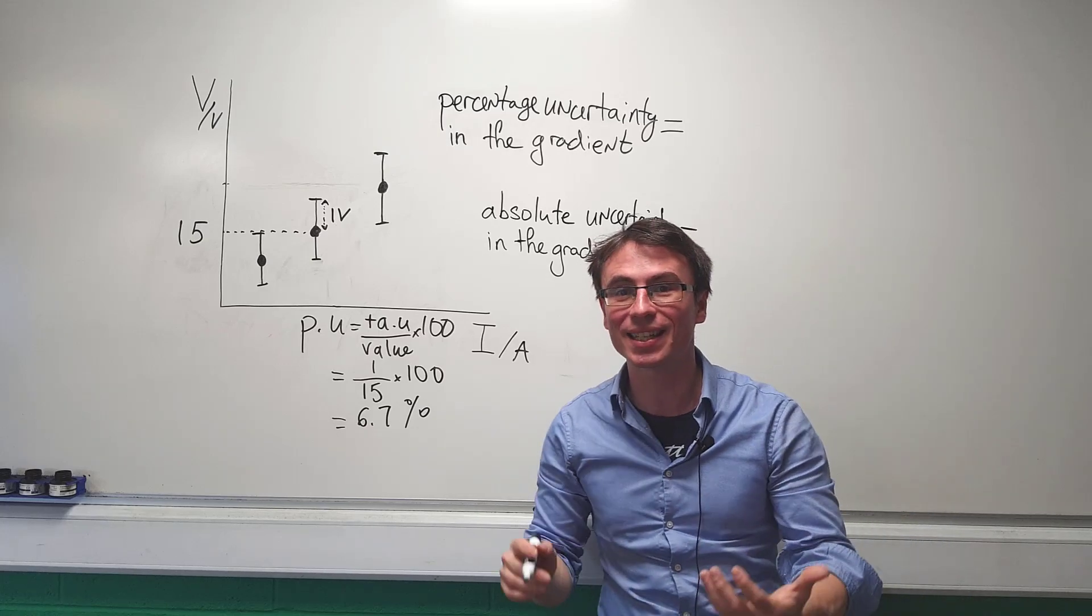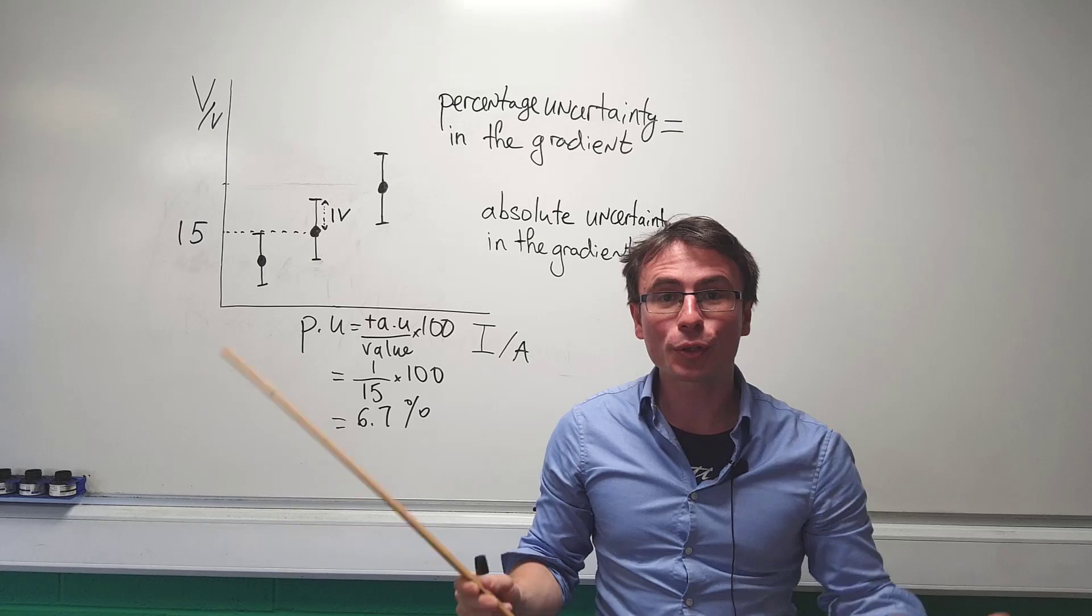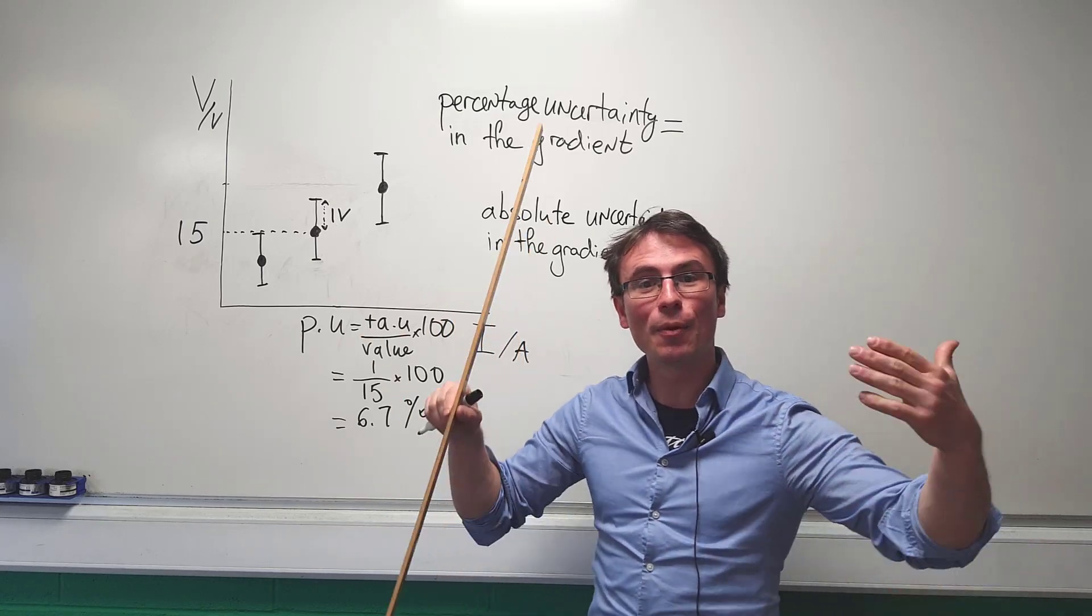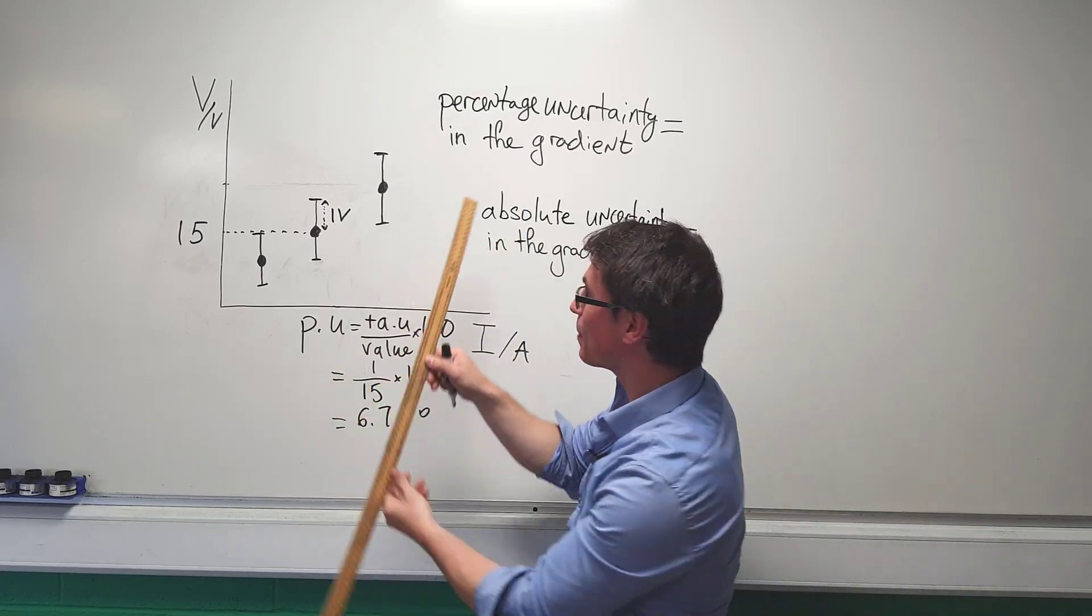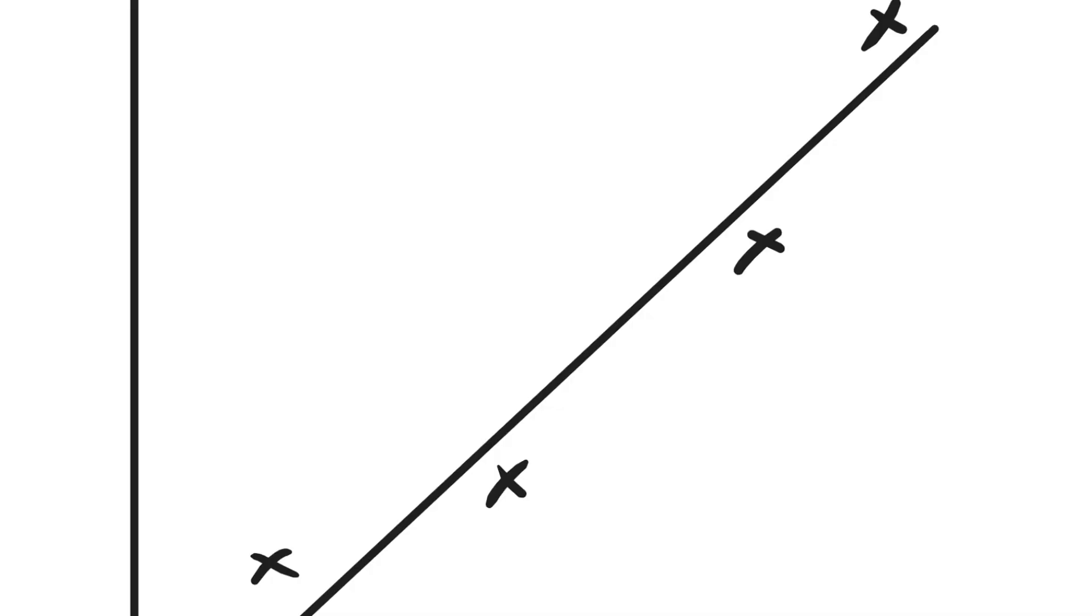Using all of the data points we can also calculate the percentage uncertainty and the absolute uncertainty in the gradient. In order to do so we need to draw the line of best fit which aims to go through all the data points. But if that's not possible we need an even spread of the points on either side of the line.